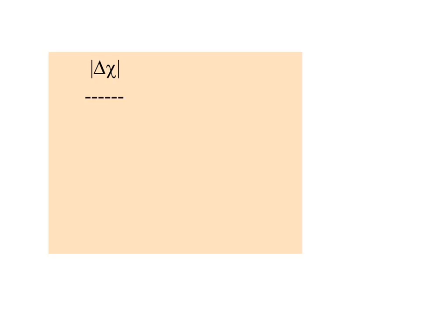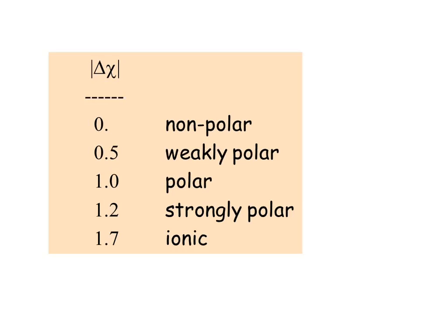Delta means 'change in,' just like change in temperature. Chi means electronegativity. You look up atom A and atom B's Pauling values, do the subtraction, take the absolute value. If the electronegativity difference is 1.7 or greater, the bond is ionic. Less than 1.7, electrons are shared — covalent. The 1.7 threshold isn't set in stone; it depends on which chemist you ask.